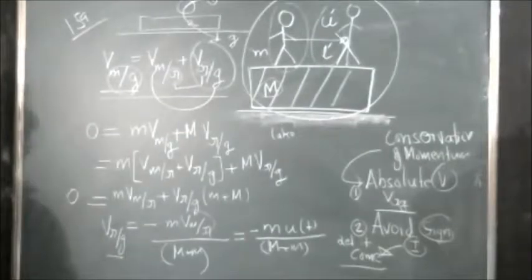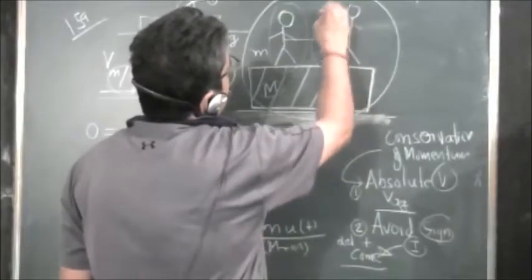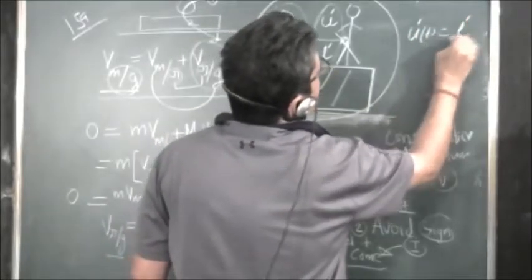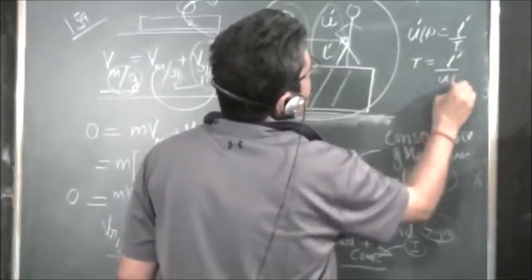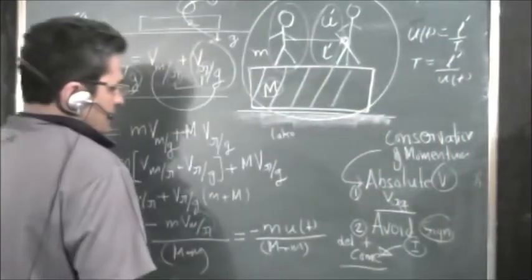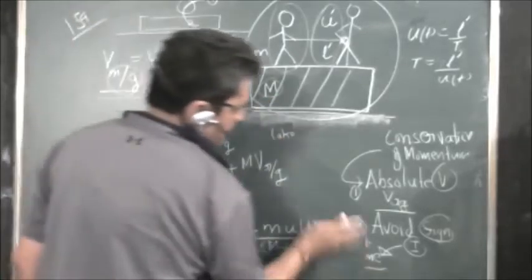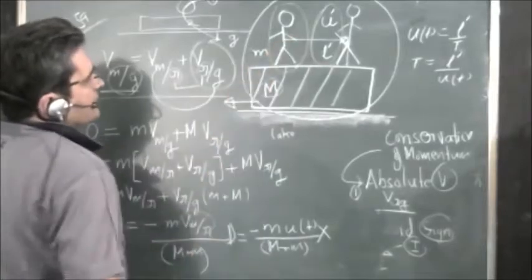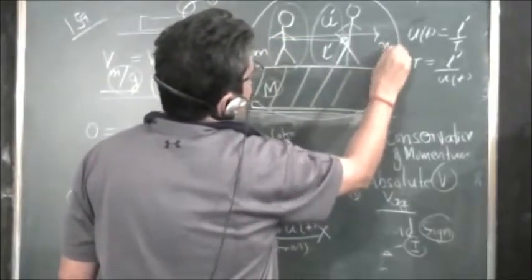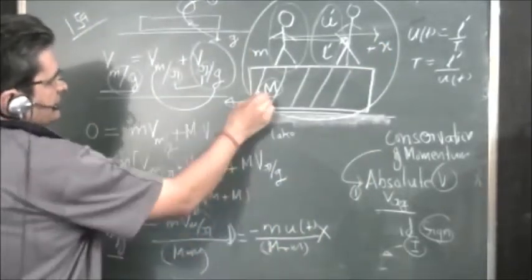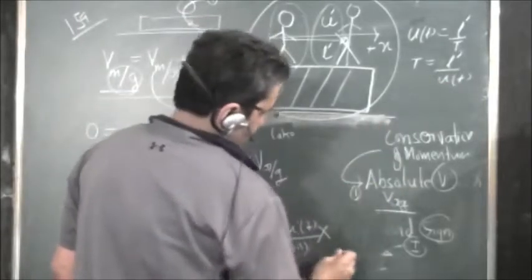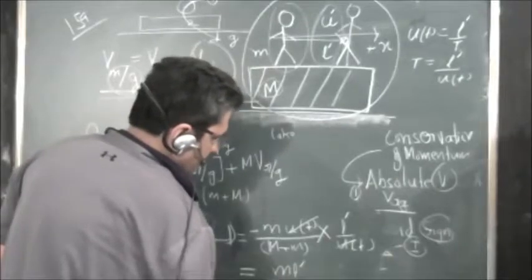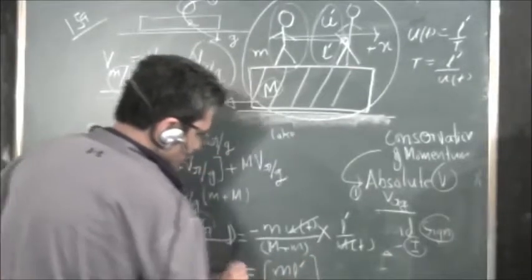This is the velocity of the raft with respect to the ground. Now, what is the distance traveled? We know u-dash equals L-dash divided by time, so time equals L-dash divided by u-dash. To find the distance traveled by the raft, multiply the raft velocity by this time. The L-dash and u-dash cancel, giving distance of raft equals M × L-dash divided by (M + m). The negative sign means the raft moves in the direction opposite to the man's motion.